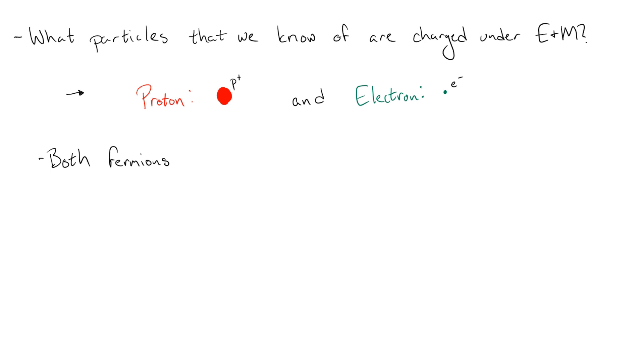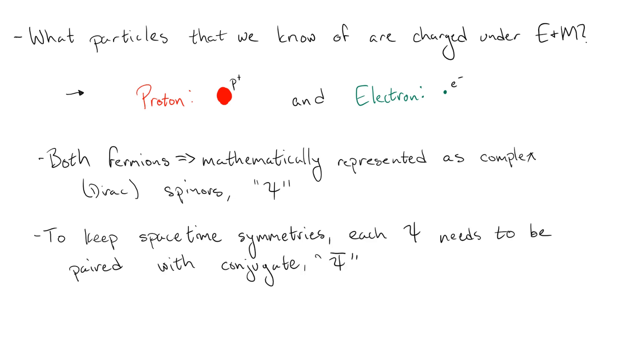In quantum field theory, fermions are represented by mathematical objects known as spinors. Now, the exact properties of spinors are not so important, but what is important is that they are most naturally represented as complex objects. They can be real in some cases, but their original formulation was complex. It also turns out that, in order to preserve spacetime symmetries, each spinor must also be paired with its conjugate.